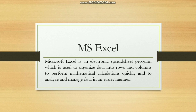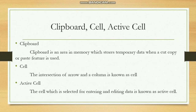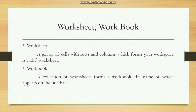Summary: MS Excel is an electronic spreadsheet program used to organize data into rows and columns, perform mathematical calculations quickly, and analyze and manage data. A clipboard is an area in memory which stores temporary data when cut, copy, or paste is used. A cell is the intersection of a row and a column. An active cell is the cell selected for entering or editing data. A worksheet is a group of cells with rows and columns forming your workspace, and a group of worksheets forms a workbook.